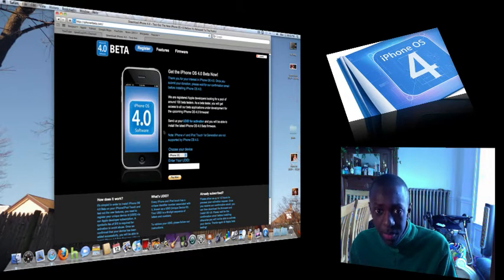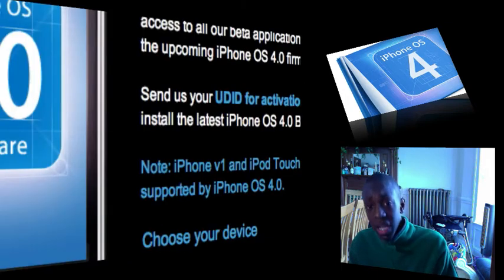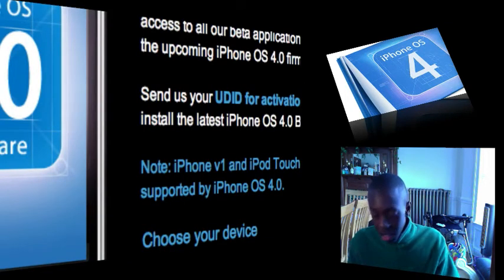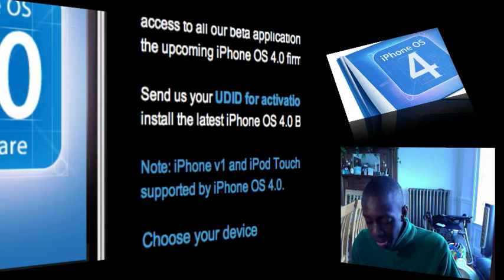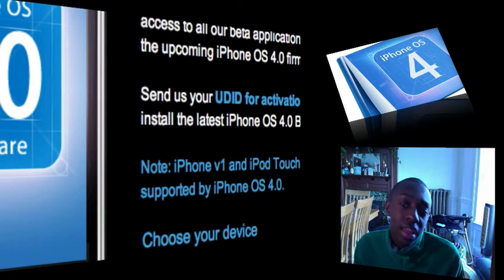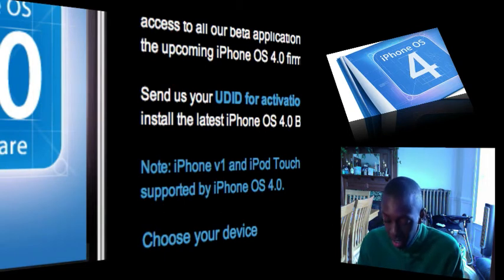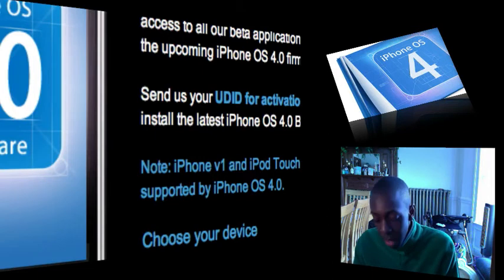It's a real simple website — it just says choose your device. Also guys, if you didn't know, you can't download this directly; Apple doesn't let you download it. But you can obviously download it from a third-party website like this. Basically what happens is Apple only releases their beta software to developers so they can start making applications for the 4.0 software, and they paid 100 bucks. So I found this website that will give it to you 100% free.